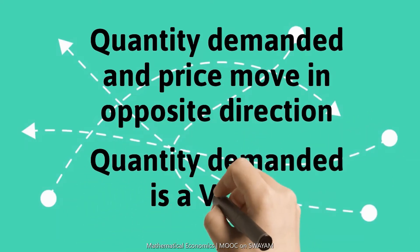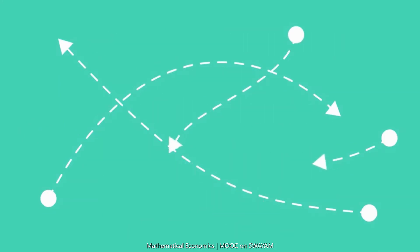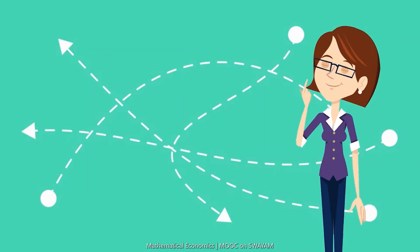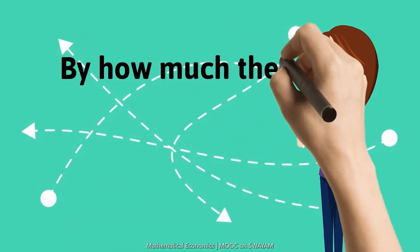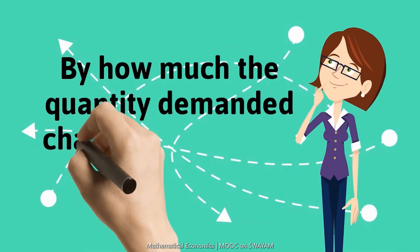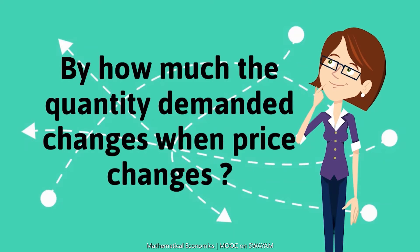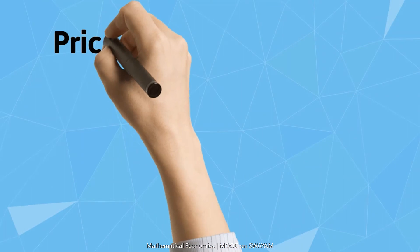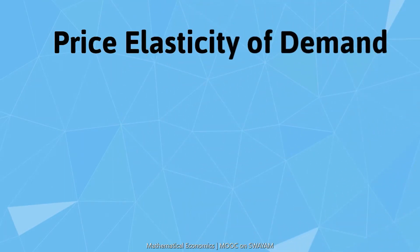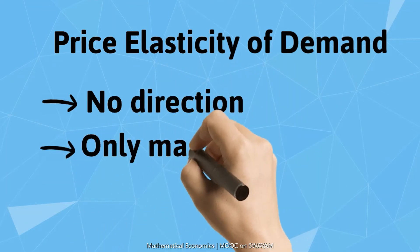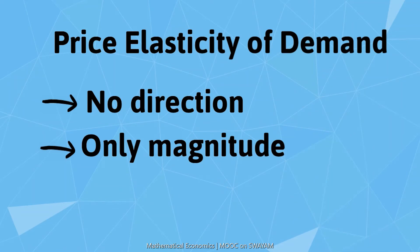Now, the law of demand does not give information about the magnitude of change with respect to the change in the price, i.e., by how much the quantity demanded change when the price changes. Economists use the concept of price elasticity of demand to measure the magnitude of this change. Elasticity of demand does not tell anything about the direction, but it has a magnitude. Hence, it may be called a scalar.